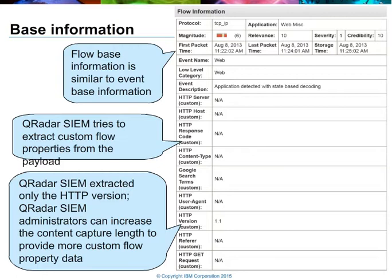It's important to read the event description field. This describes how we determined which application was observed. In this particular case, you'll see that the application was detected by state-based decoding — there is a component within QRadar that observed how the particular source and destination interacted to determine that this was, in fact, an HTTP interaction.